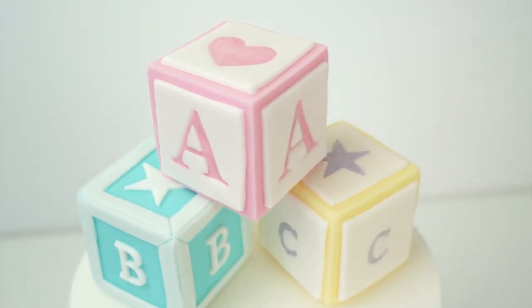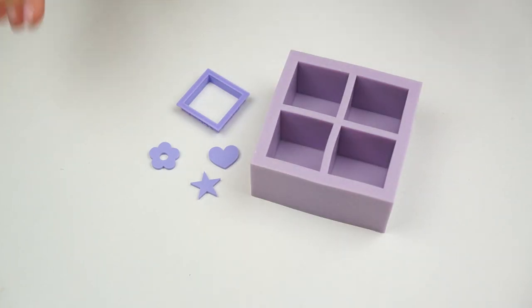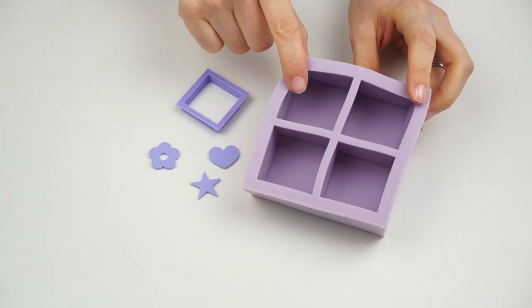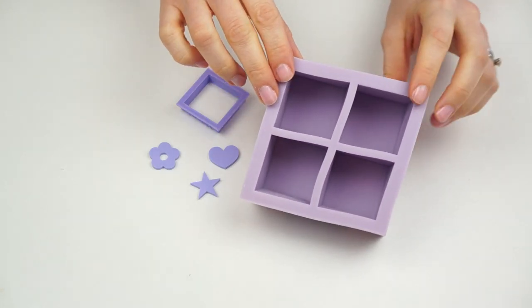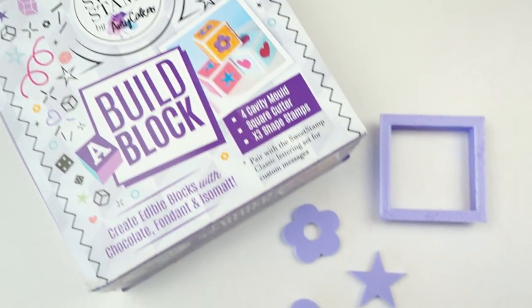Okay let's get started. So I'm going to be using a mold. Now it's always been a bit tricky to make baby blocks and get the straight sides and those sharp edges. In order to make it a lot easier I'm going to be using this cube mold. Now this is the Builder Block mold and this one is by Sweet Stamp.